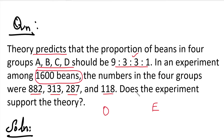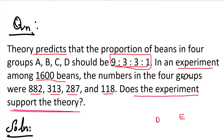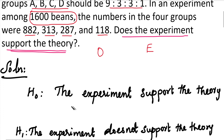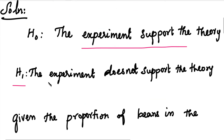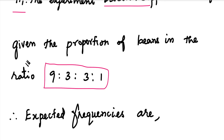In this question, does the experiment support the theory? That is, what does the theory predict — what does it expect in these four groups? The beans count is in the ratio 9 is to 3 is to 3 is to 1. H1 is the alternative hypothesis — the opposite: the experiment does not support the theory, and in the four groups the beans count is not in the ratio 9 is to 3 is to 3 is to 1.